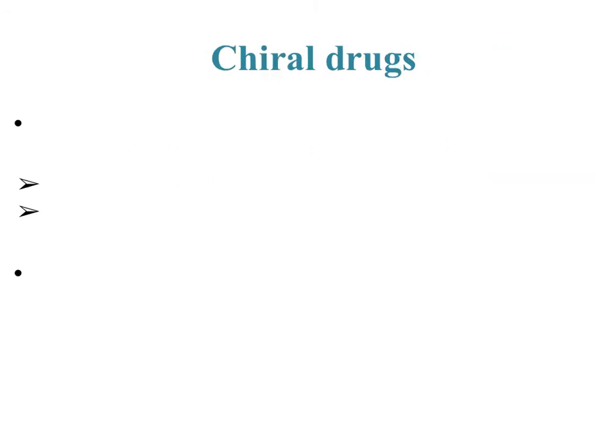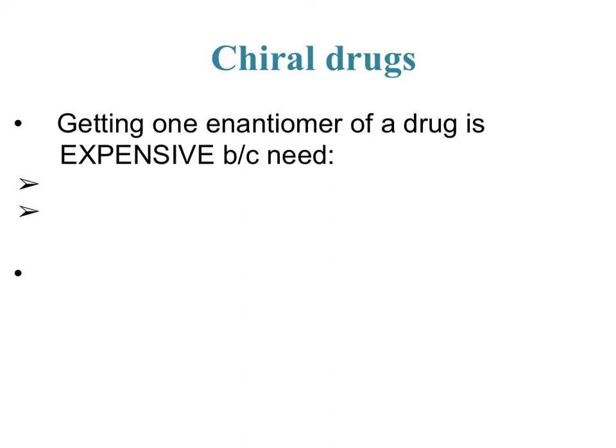Based on what we said about enzymes being chiral and preferring a chiral substrate, you would assume drugs would be chiral, and you'd be partially right. Drugs made to be one enantiomer are very effective, but making one enantiomer is really expensive. Most drugs you purchase are made by pharmaceutical companies that engineer the reactions needed, and then industry tries to make it cost-effective in large batches. The problem with getting a specific enantiomer is you need several things.